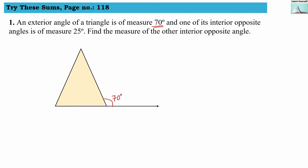One of its interior opposite angles is given. This triangle is denoted with vertices A, B, and C. If 70 degrees is the exterior angle, then angles A and B will be the interior opposite angles. One of its interior opposite angles is given, so I am marking angle A as 25 degrees. Angle A is 25 degrees and angle B we do not know.